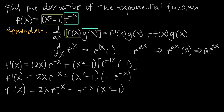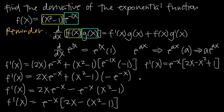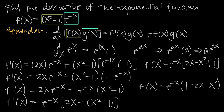We could leave it in that form, or we can factor out e to the negative x. So f prime of x equals e to the negative x times the quantity 2x minus the quantity x squared minus 1. Distributing the negative sign gives us 2x minus x squared plus 1. Reordering with the positive term first, our final answer is f prime of x equals e to the negative x multiplied by 1 plus 2x minus x squared. This is the derivative of the original function, found using product rule and the derivative of the exponential function e to the x.